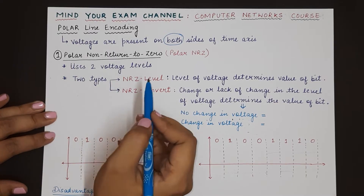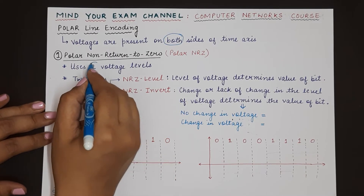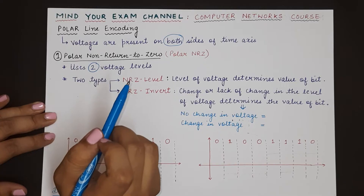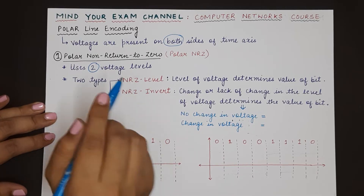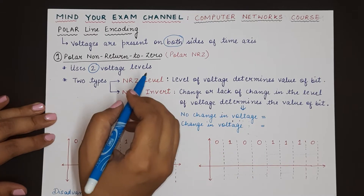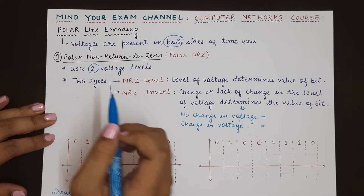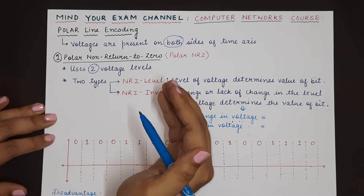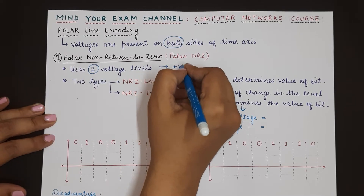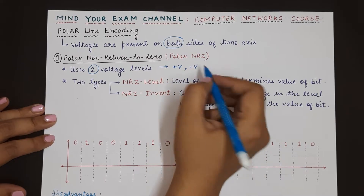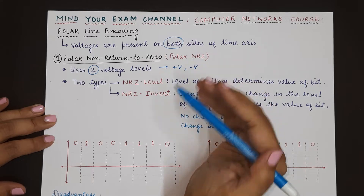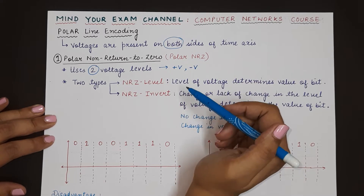The bits will now be represented using two voltage levels. In unipolar NRZ, bit one was represented using a positive voltage and bit zero using a zero voltage. Whereas in polar NRZ, zero voltage will not be used. Rather, a positive voltage and a negative voltage will be used — plus V and minus V — so the signal levels are present on both sides of the time axis.